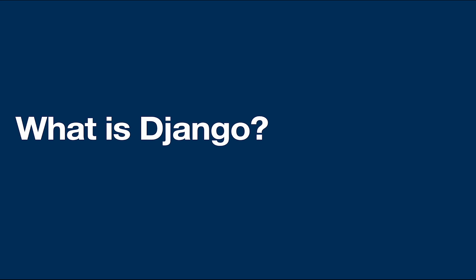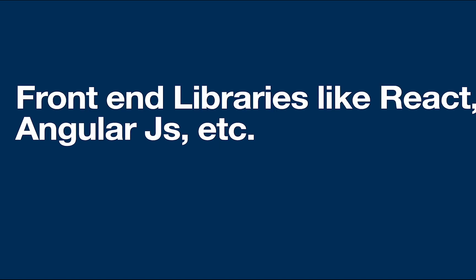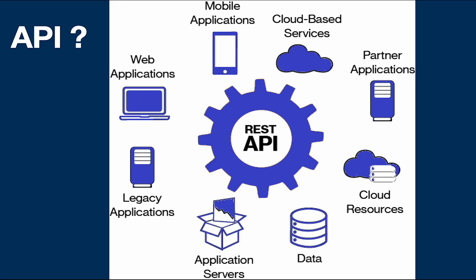Django is a high-level Python web framework that encourages rapid development with clean design. We can create a complete full-stack website using Django. But nowadays a lot of frontend libraries like React and AngularJS are used extensively for user interfaces. So we are mostly going to use Django only for the backend of the application, where we write APIs for showing dynamic data at the frontend.